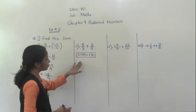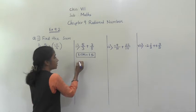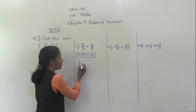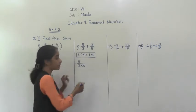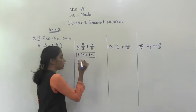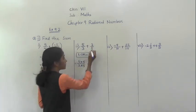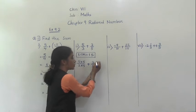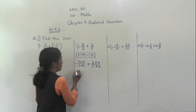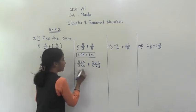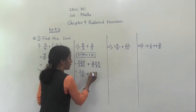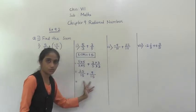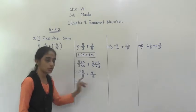After finding LCM, we are going to make the denominator same. Write 5 upon 3. 3 fives are 15, so multiply by 5 for the denominator. Similarly multiply by 5 for the numerator also. Then 3 upon 5. 5 threes are 15, so multiply by 3 for the numerator also. Now solve: 5 fives are 25 upon 15, plus 3 threes are 9 upon 15. Both denominators are now same.